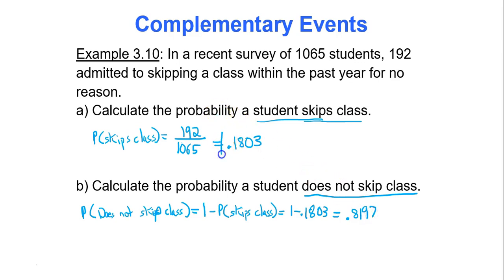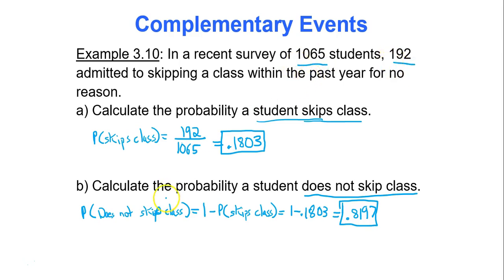My answer from part A was used to find the answer for part B. You might think the complement rule doesn't save much time here — we could have just subtracted 192 from 1065. But you're going to learn in a minute that the complement rule is highly beneficial.